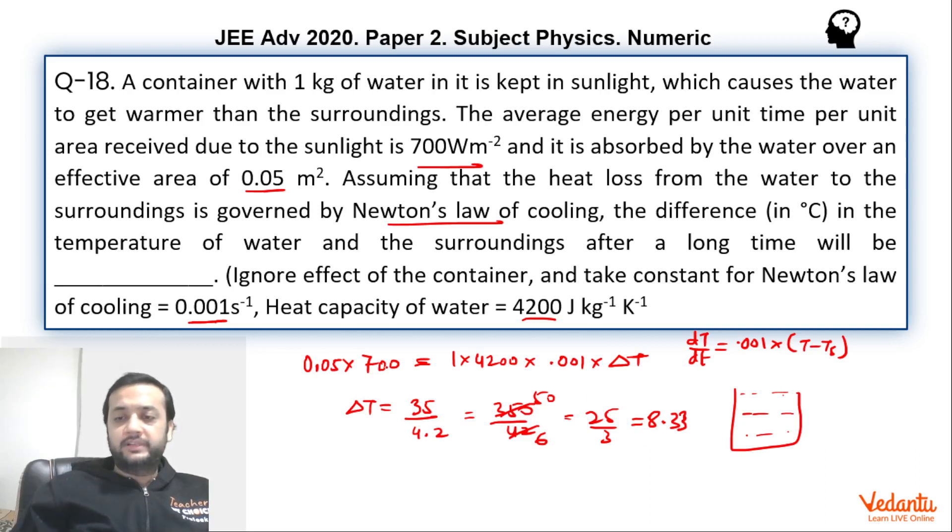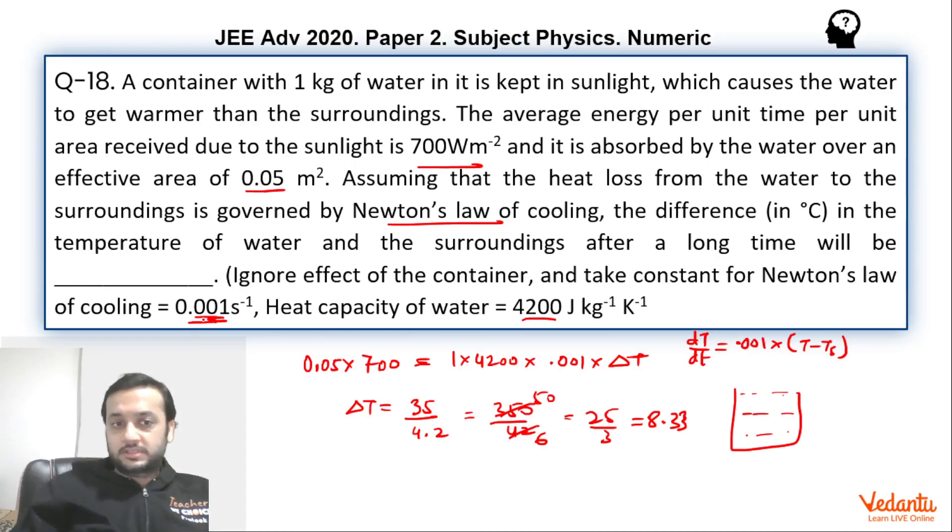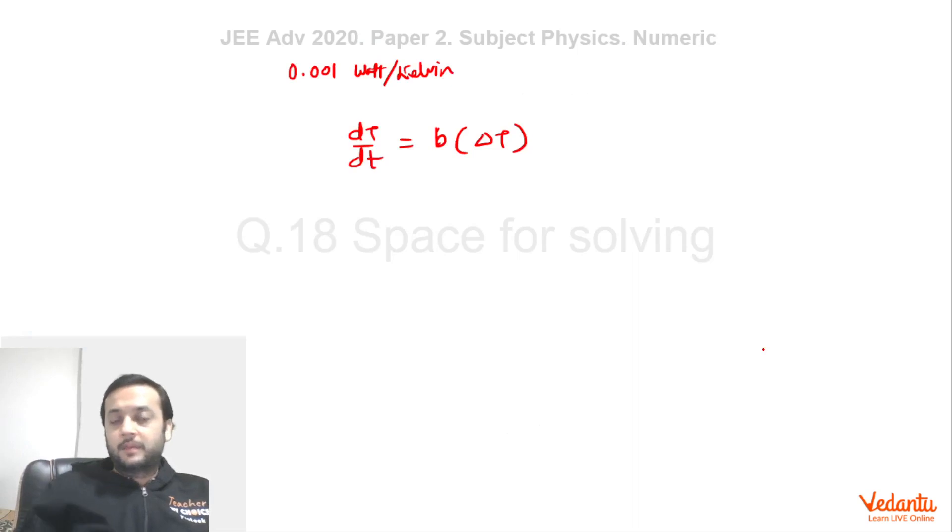Now comes the interesting part. How did we decide that the Newton's law that this is the same constant which we are talking about here? Newton's law of cooling constant is 0.001 per second. Remember, we have to see the unit. Like sometimes if the question says that the constant in the Newton's law of cooling is 0.001 Watt per Kelvin, so now you have to think. What does this mean? Now Newton's law of cooling is DT by DT equals some constant into temperature difference. So clearly this constant which is given over here will have a unit of per second. Hence we used this. We saw the unit and took this as the constant in Newton's law of cooling. But if question says that the constant has the unit Watt per Kelvin, then of course it cannot be this constant.